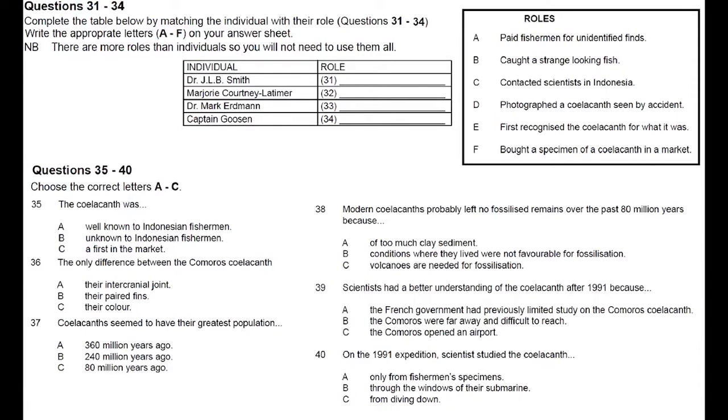This first coelacanth led to the discovery of the first documented population off the remote Comoros Islands between the mainland of Africa and Madagascar. For 60 years, this was presumed to be the only coelacanth population in existence. Originally, it was a concern that the coelacanth might have a very limited range, and that overfishing along the Comoros Islands might wipe it out.